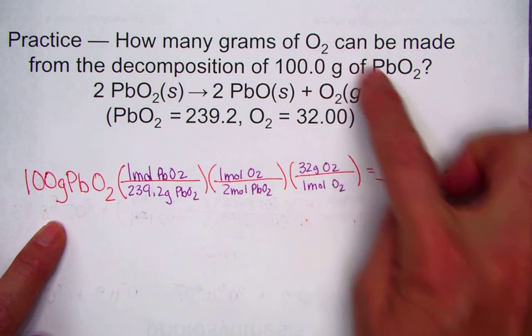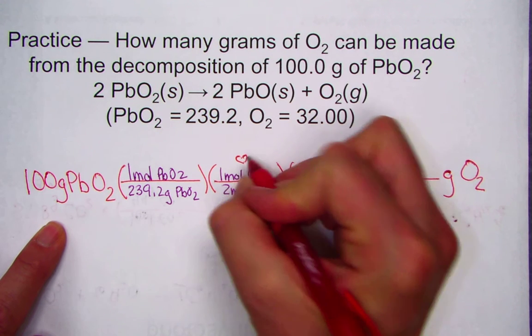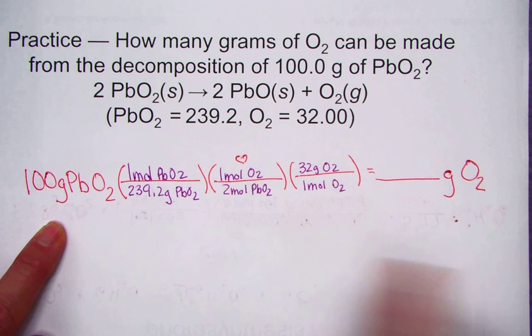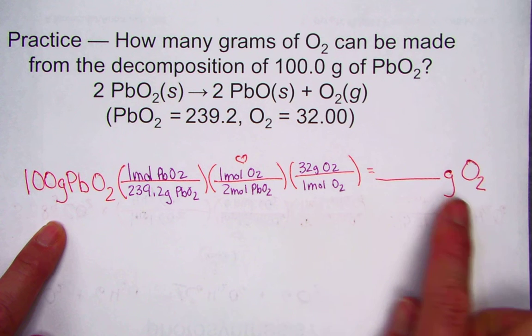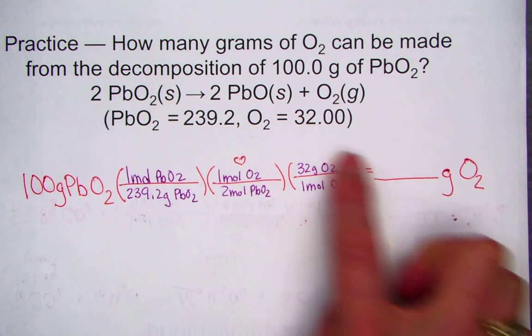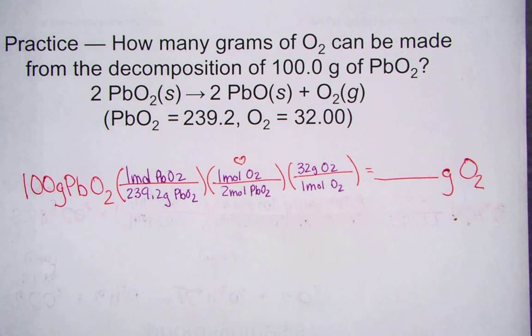When I noticed 100 grams of lead 4 oxide was the given, what we were being asked to solve for was the mass of oxygen. I set up the three steps to stoichiometry: divide, ratio, multiply, to work my way from mass of given to mass of want.